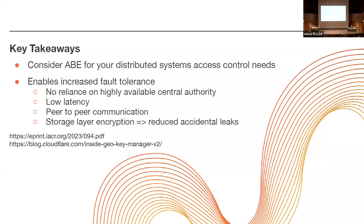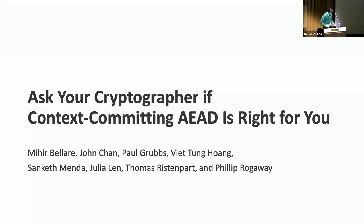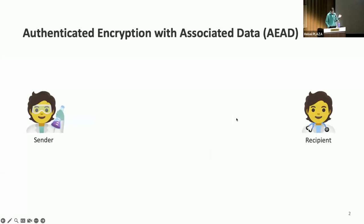Last but not least, we have a talk on context-committing authenticated encryption with associated data by a large list of authors, and Sankev is going to give the talk. Thanks so much for the introduction. Yes, we have too many authors — all of them are awesome. I'm so happy to be here today. I'll be making a case for context-committing authenticated encryption. Our story starts with authenticated encryption with associated data, also known as AEAD — one of the most fundamental primitives, used everywhere from TLS to cloud storage to end-to-end encrypted messaging.